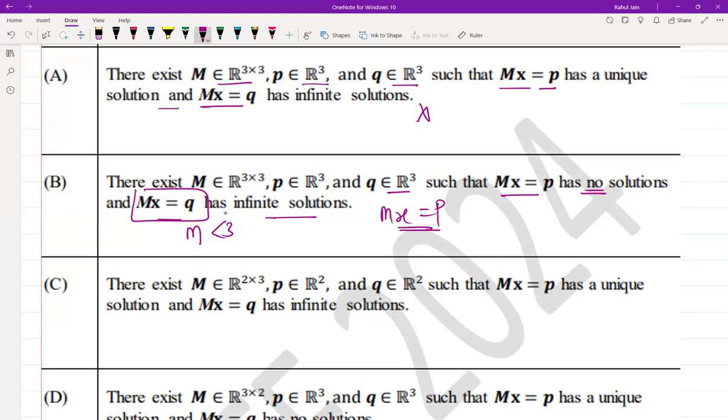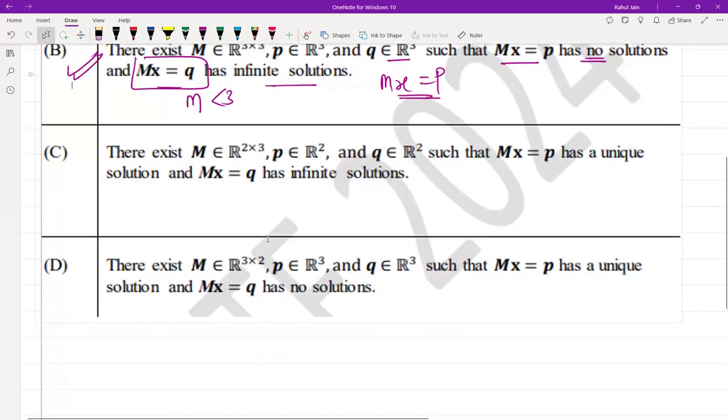If you look at the other options, option C is also incorrect, but option D is correct. The reason is that M is a 3×2 matrix, and there are more equations than unknowns.